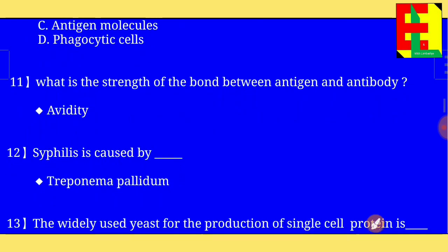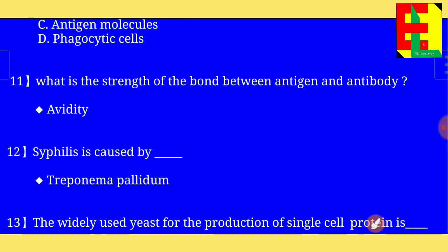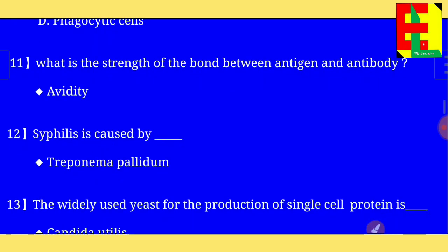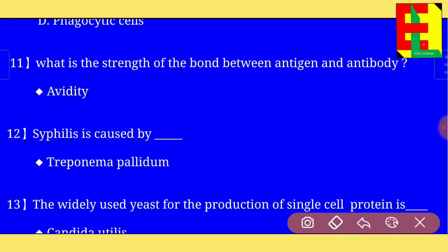Question number eleven: what is the strength of the bond between antigen and antibody? The answer is: avidity is the strength of the bond between antigen and antibody.